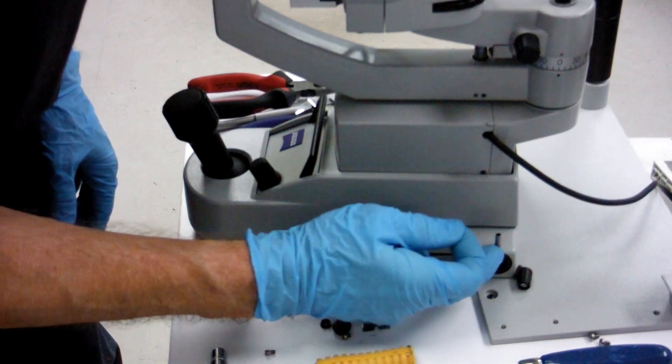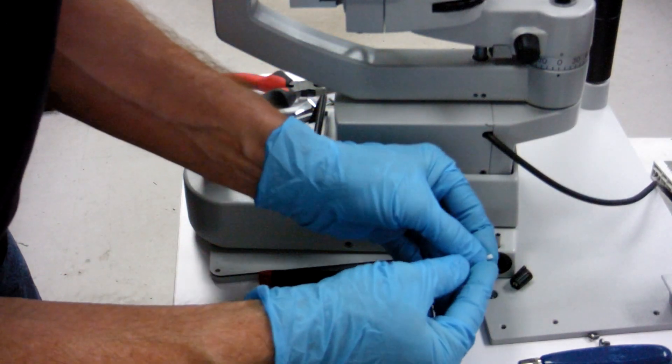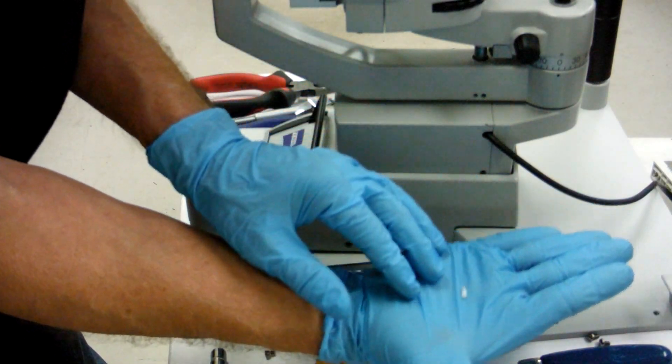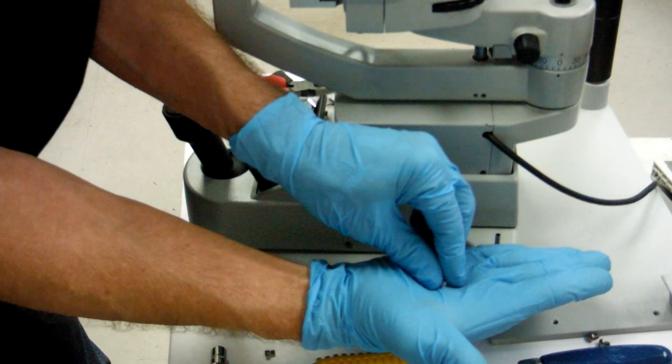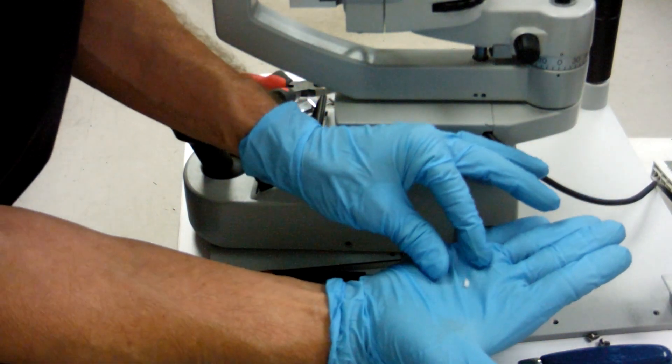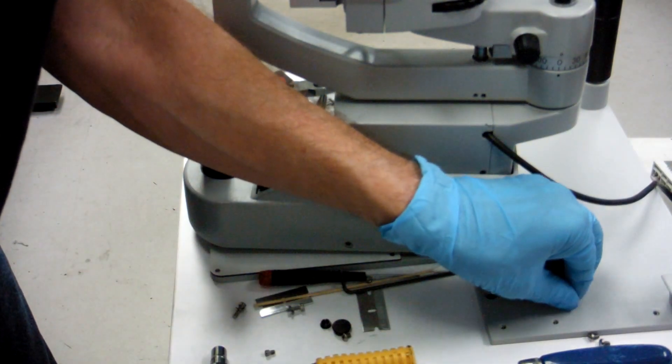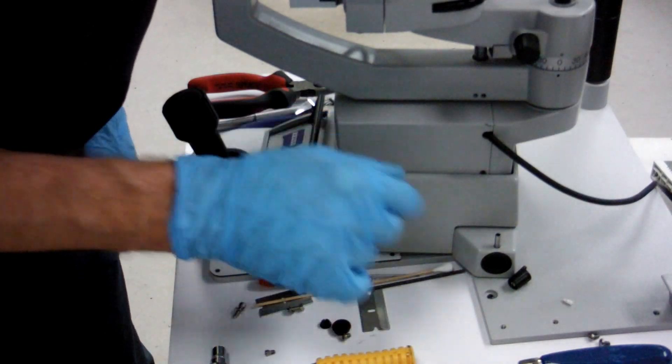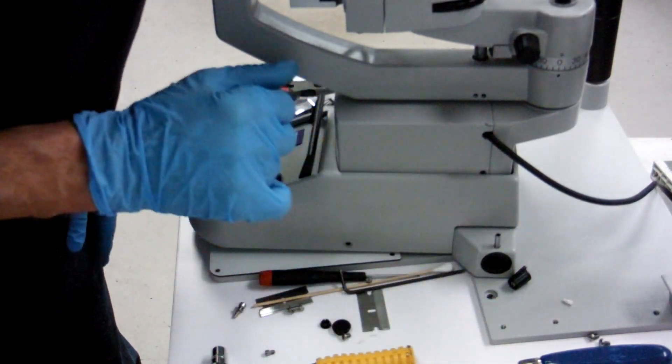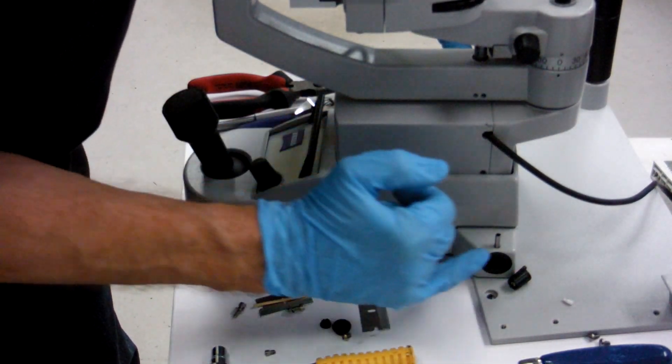In this locking mechanism, you have your knob, you have a spring, and then you have a little plunger pin that may wear out.